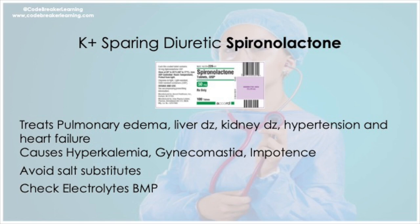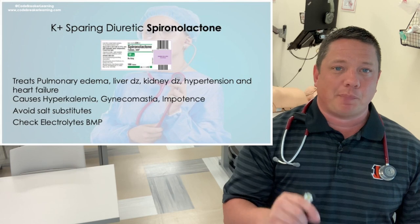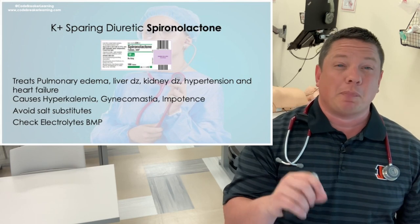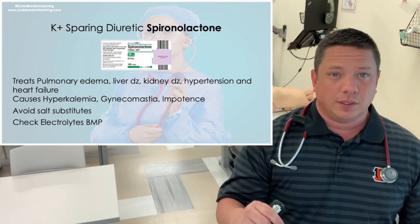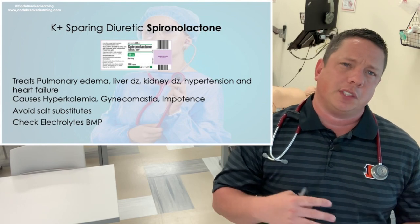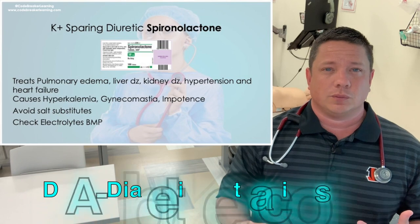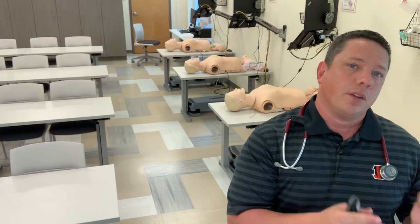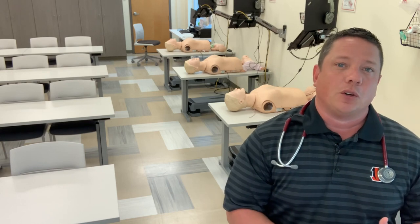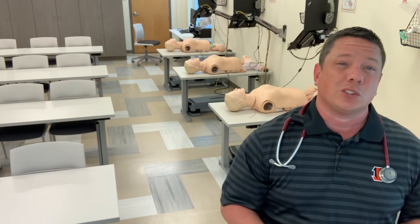The third diuretic is a potassium-sparing diuretic — spironolactone. It spares potassium, so it has a risk of hyperkalemia, which is obviously very dangerous. We also see hyperkalemia in conditions like DKA. Remember your potassium range is 3.5 to 5. Spironolactone may also cause gynecomastia — man boobs — and can cause impotence. With this medication, you want to avoid salt substitutes.